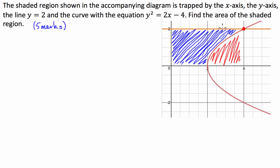So, let's go about it. We're going to work out what the point of intersection is between the line y equals 2 and y squared equals 2x minus 4. So, what I'm going to do is I'm going to substitute 2 into this second equation. So, I have 2 squared equals 2x minus 4.